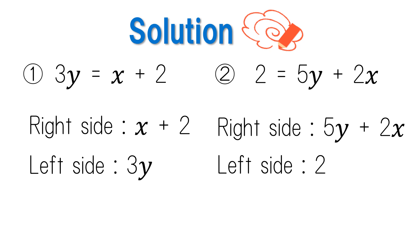For problem number two, the right-hand side is 2 and the left side is 5y plus 2x. Therefore, the equality obtained by switching the right and left-hand sides is 2 equals 5y plus 2x.